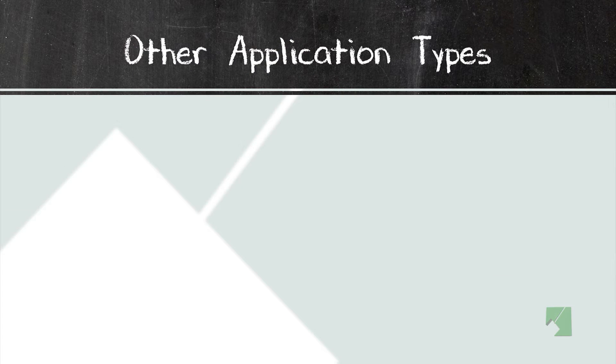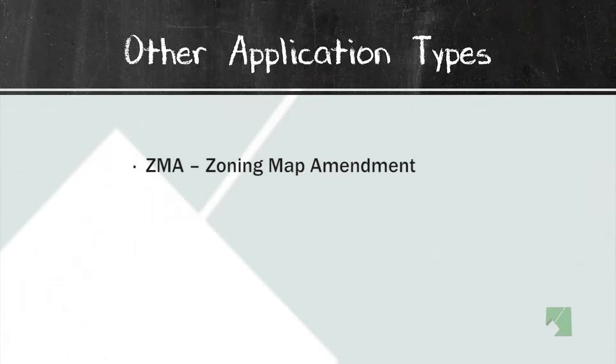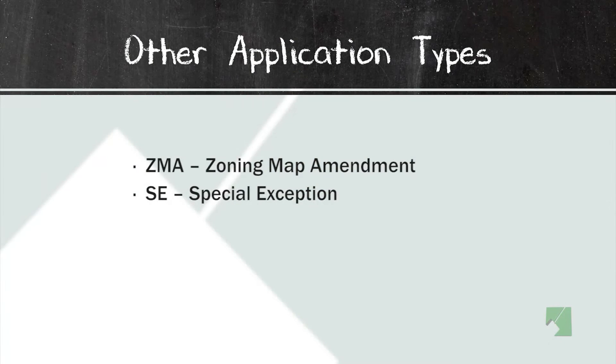Other application types we deal with on a regular basis include zoning map amendments. If a property owner wants to change their zoning, they can apply for a zoning map amendment to change their zoning district. That process must be done in accordance with state law, which requires certain findings to be made in order to approve that type of amendment. We also deal with special exceptions, which are specific types of permitted uses — permitted with conditions and approved by the district council.